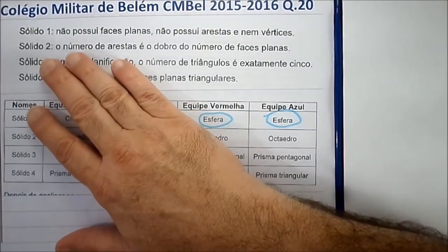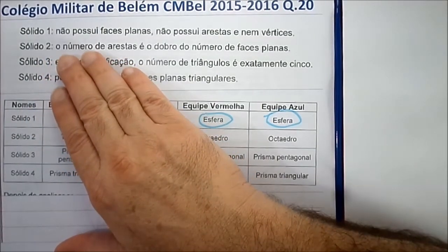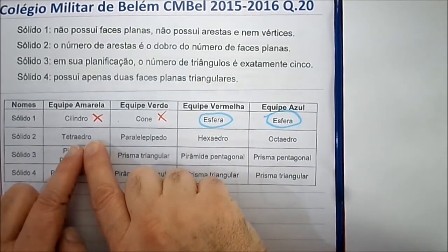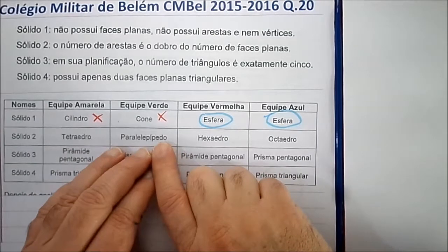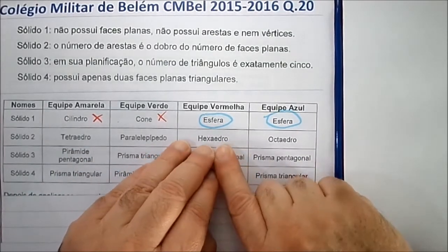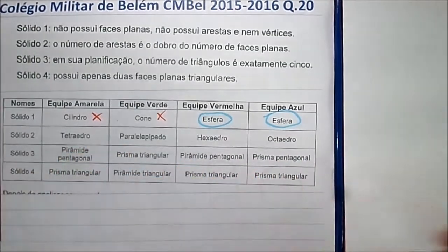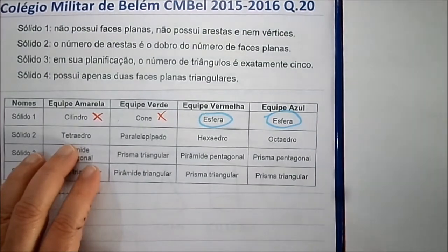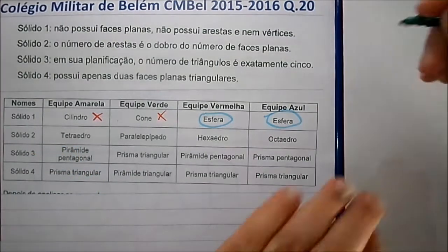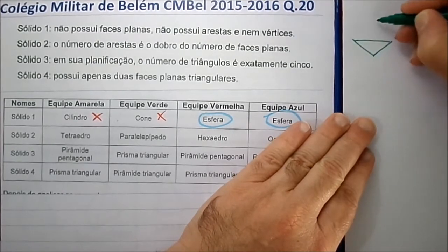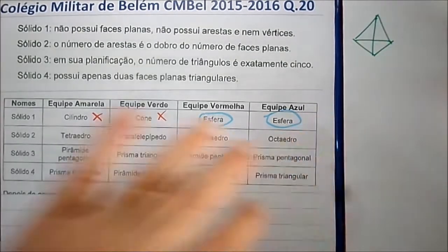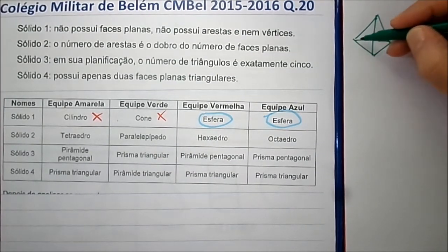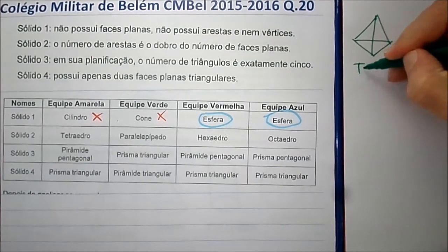O sólido 2: o número de arestas é o dobro do número de faces planas. A equipe amarela falou que é o tetraedro, a verde disse paralelepípedo, a vermelha disse hexaedro e a azul disse octaedro. Você tem que conhecer esses sólidos. O tetraedro é um sólido geométrico que tem quatro faces, e as faces são triângulos.